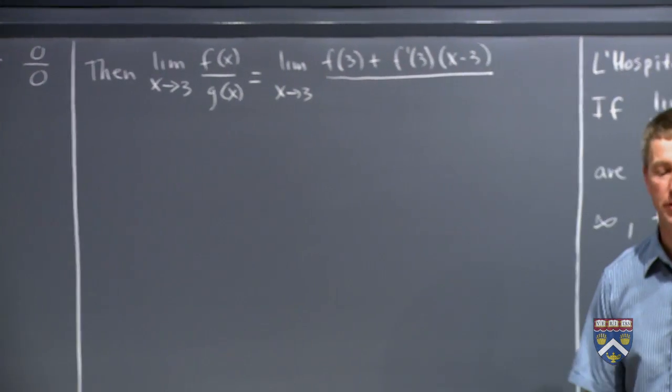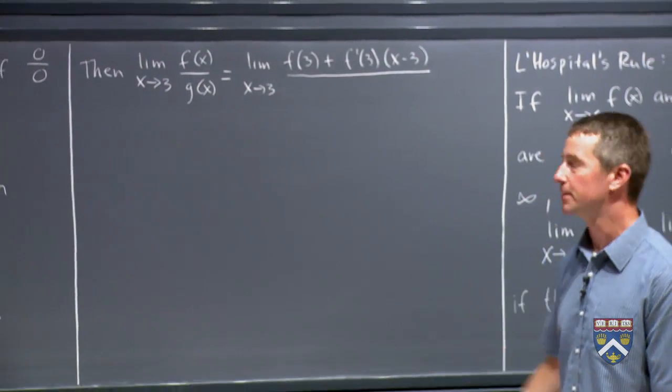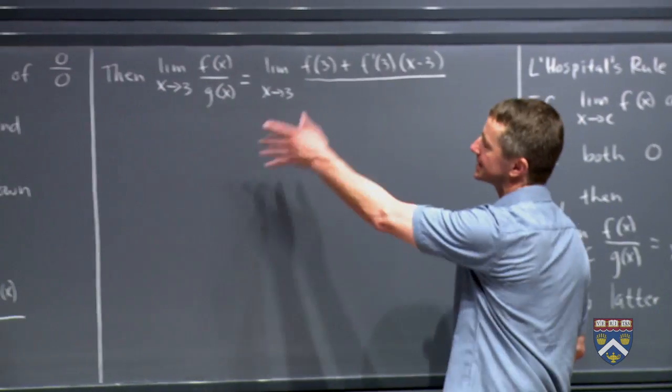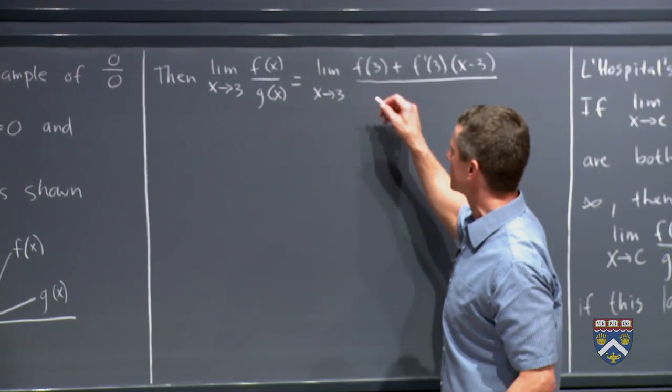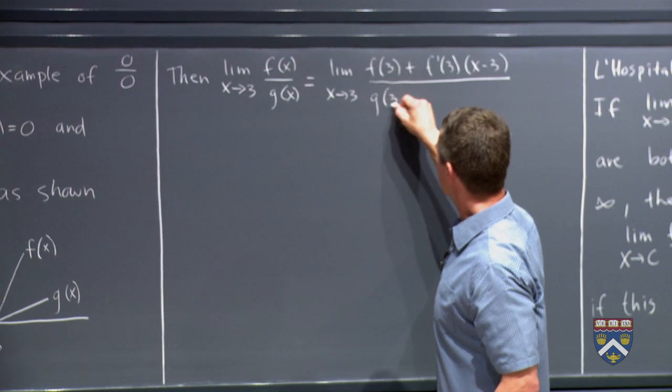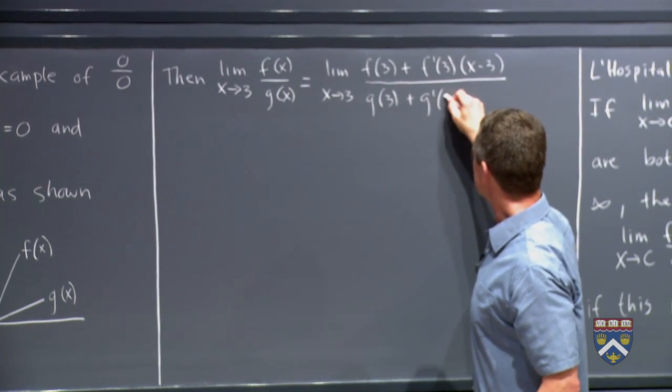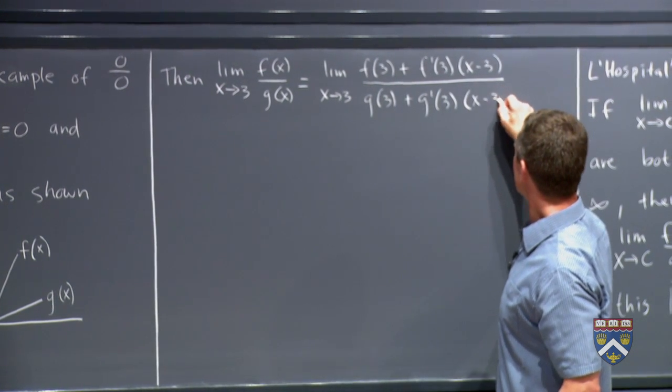So if you look back at the local linearization segment, that's the formula that we used back there. And then for g, it's the same formula except that we're using the function g instead. So we have g(3) plus g'(3) times (x - 3).